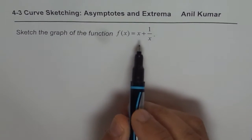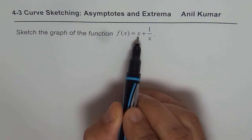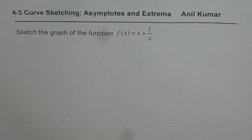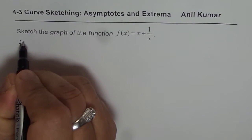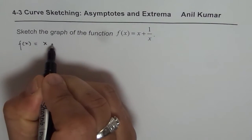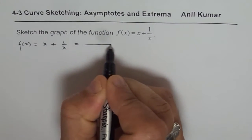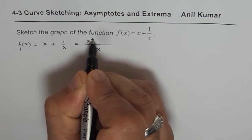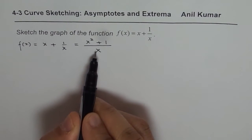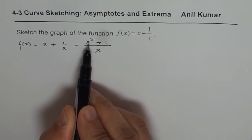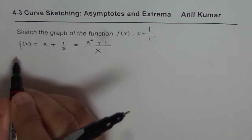This is a rational function where the degree of the numerator is one more than that of the denominator. You could rewrite f(x) as x + 1/x, or factor out x to get x(x² + 1). Since the degree of the numerator is one higher, we expect an oblique asymptote.